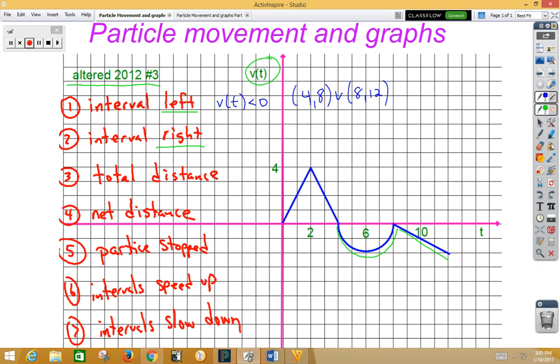The particle is going to travel to the right when velocity is positive. That would be the portion of the graph above the x-axis. So that would be from 0 to 4 because velocity is positive.